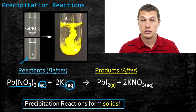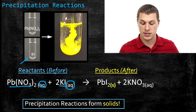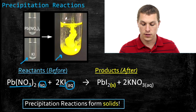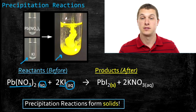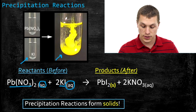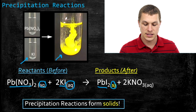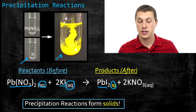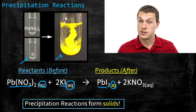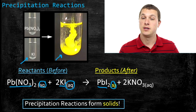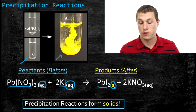It looks like you're adding two clear liquids together, and you get out this yellow. That yellow is a solid, and it turns out to be lead iodide. When you mix together potassium iodide and lead nitrate, you get out a solid lead iodide. That's called a precipitation reaction, because a solid is forming from two dissolved chemicals.